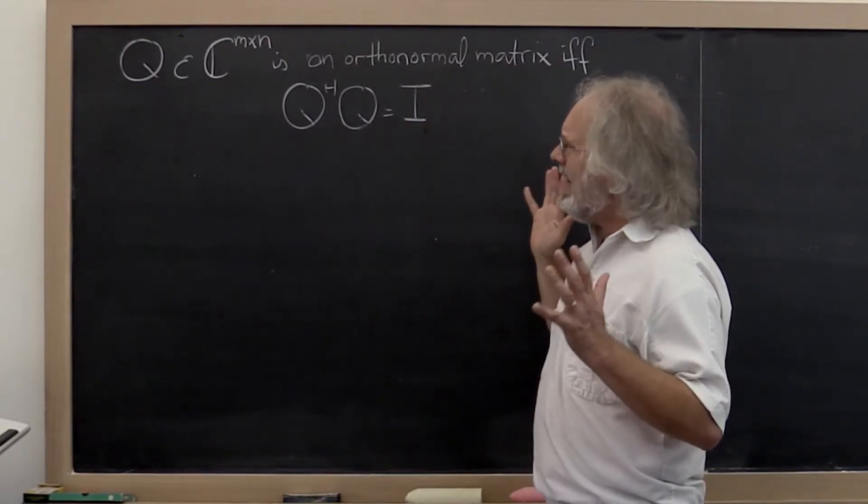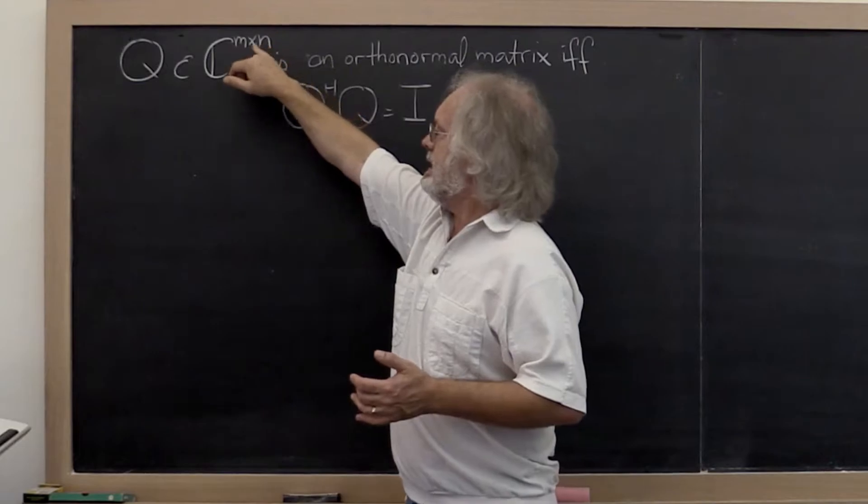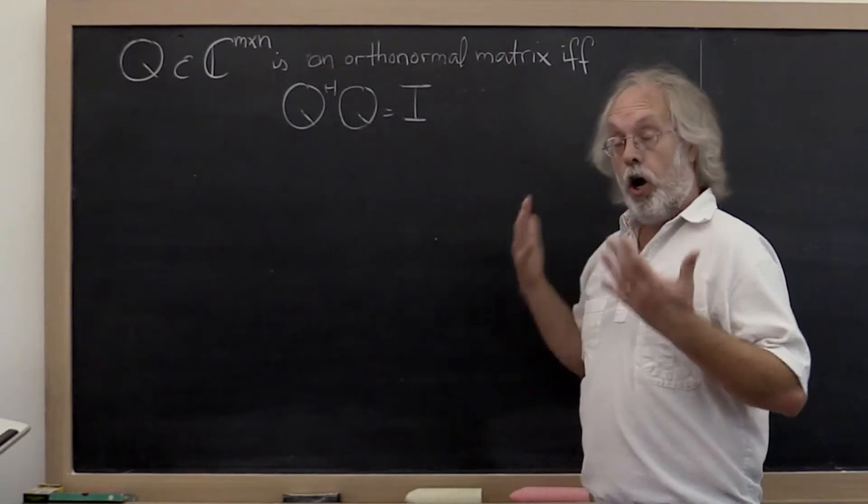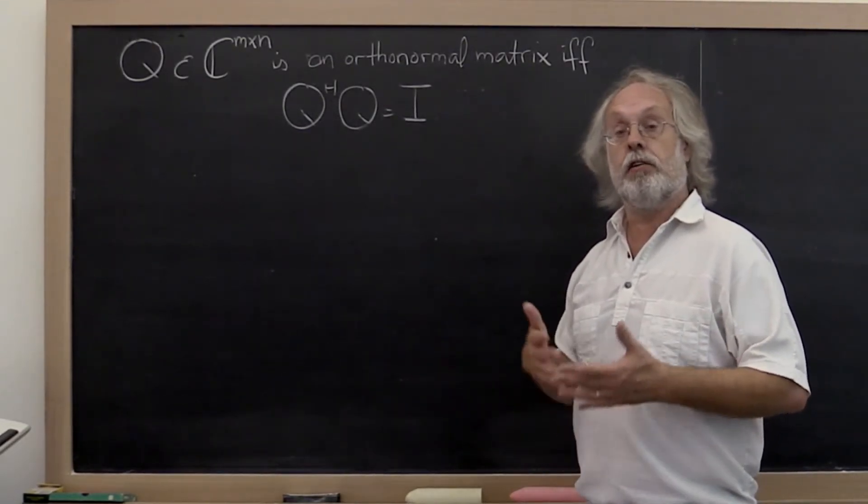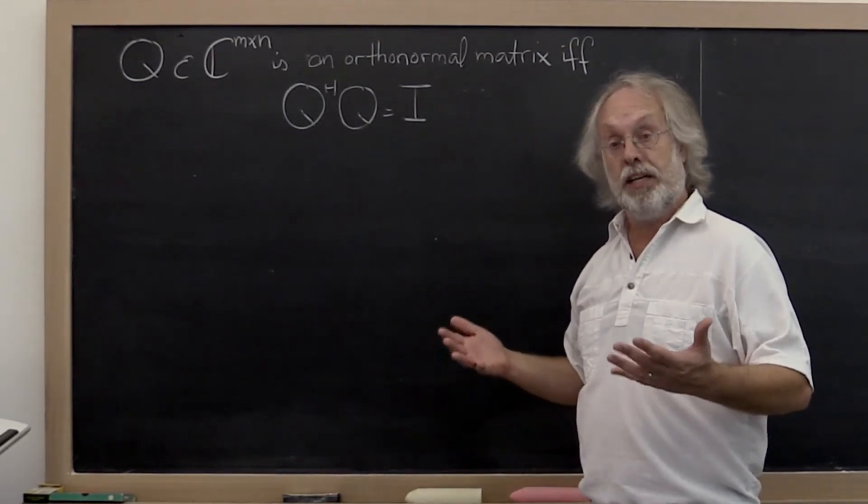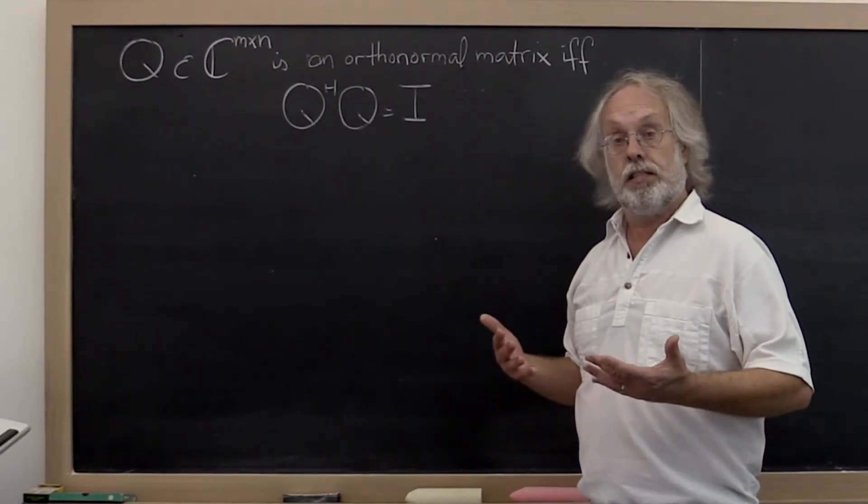Now inherent, therefore, n is less than or equal to m because the columns of an orthonormal matrix are mutually orthogonal. Therefore they are linearly independent. And you can only have at most m linearly independent vectors of size m.